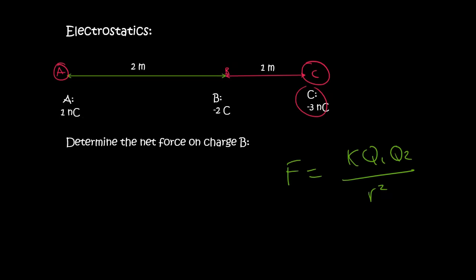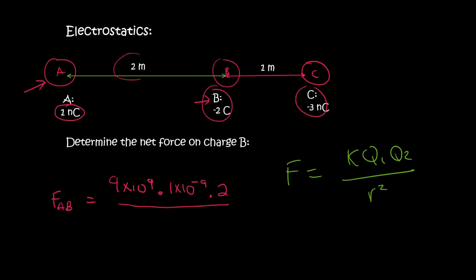So let's have a look at the effect of A on B. So I'm going to say FAB equals to K, which is 9 times 10 to the 9 times by its charge. Now its charge is 1 for A, and remember when there's an N, then you have to use 10 to the minus 9. Then if I look at B, its charge is minus 2, but I don't put the minus in the calculation. The distance between A and B is 2, and then always remember the square.